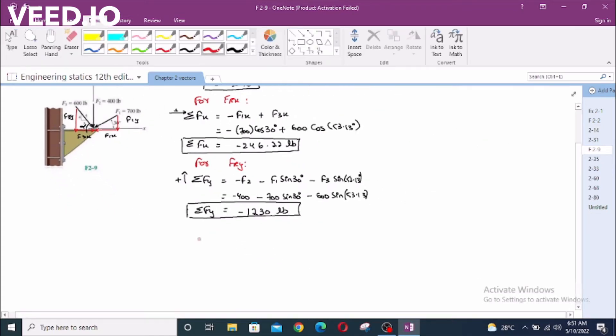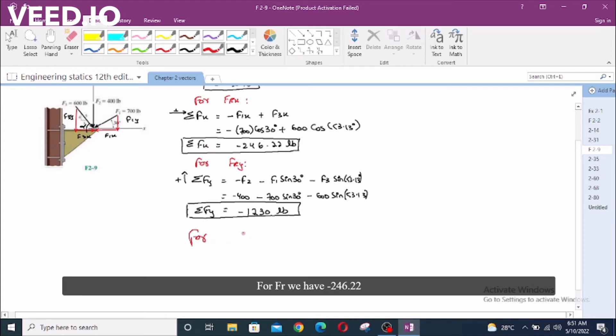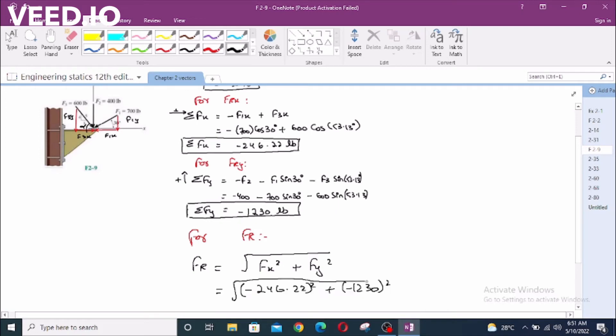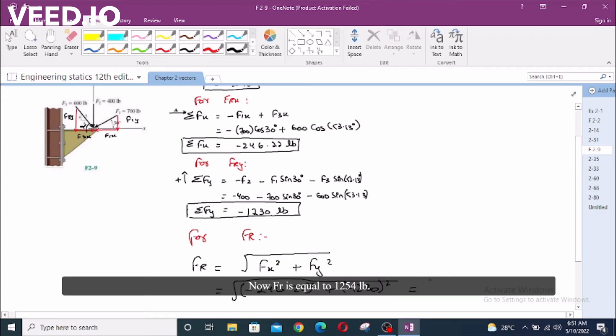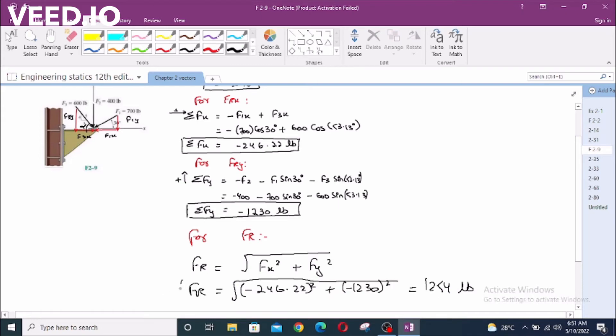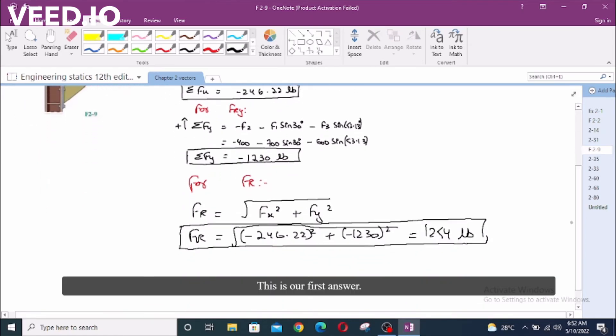So now for FR, FR is equal to Fx squared plus Fy squared. We have negative 246.22 lbs squared plus negative 1230 squared. FR equals 1254 lbs. This is our first answer.